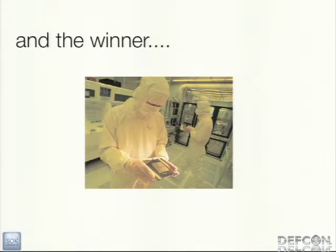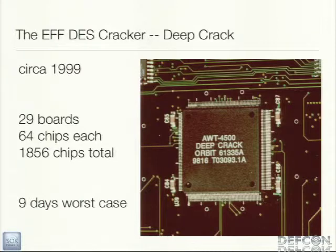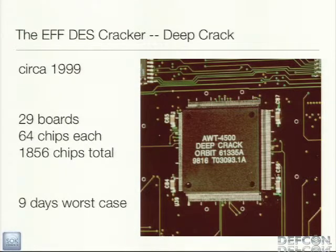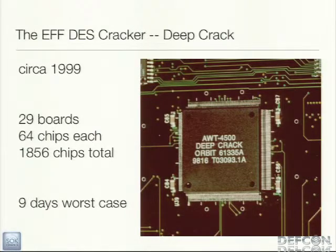People have realized this for a long time. Back in 1999, the EFF built Deep Crack, basically trying to prove that anybody for a small amount of money — in this case about a quarter million dollars — would be able to break DES in a pretty short amount of time. In this case it was about nine days worst case, with about 1,800 chips total that they fabbed themselves.